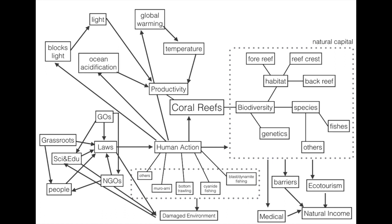Blockage of light, ocean acidification, global warming, and more all affect the productivity of coral reefs. In order to solve these problems that human activities cause, one requires a lot of resources and people. These include GOs, laws, NGOs, grassroots organizations, science and education, and the public.